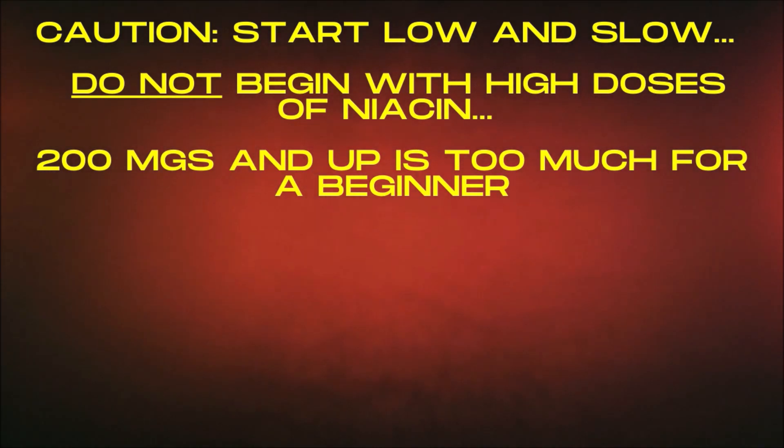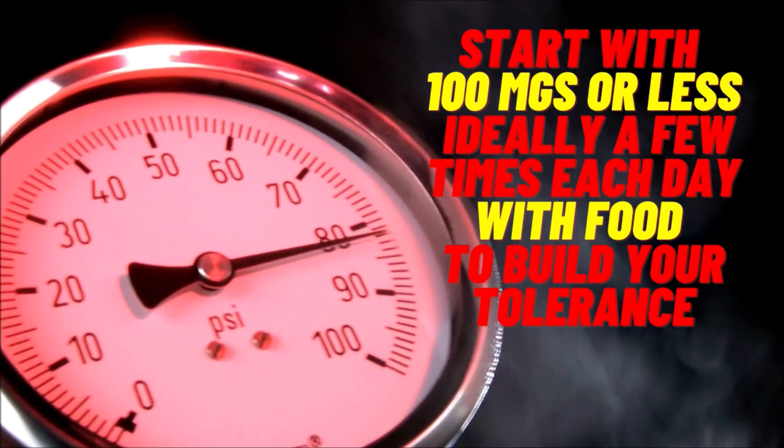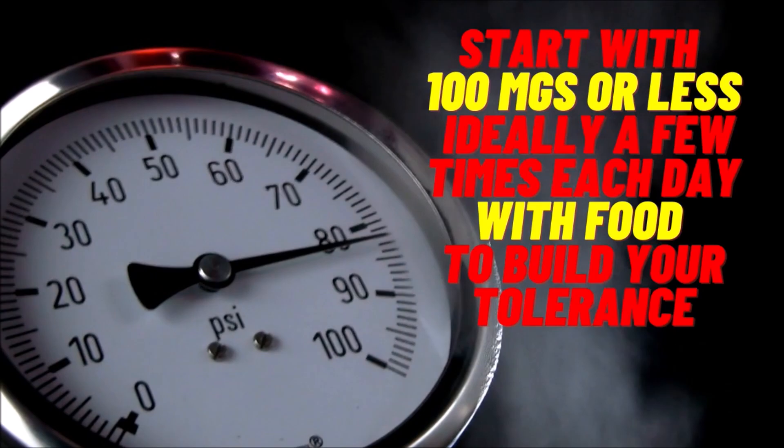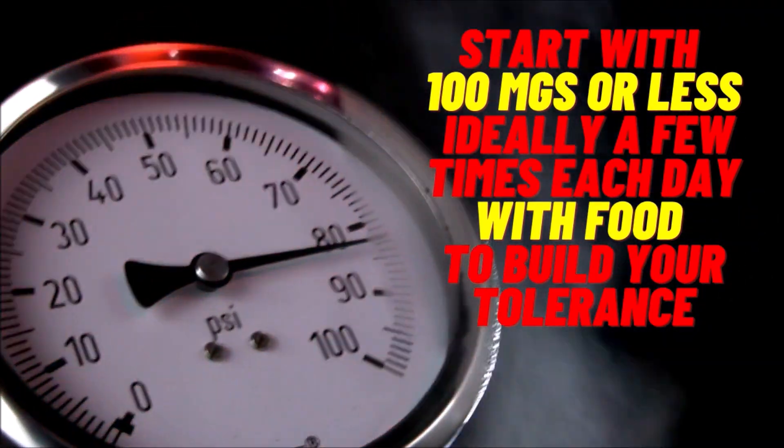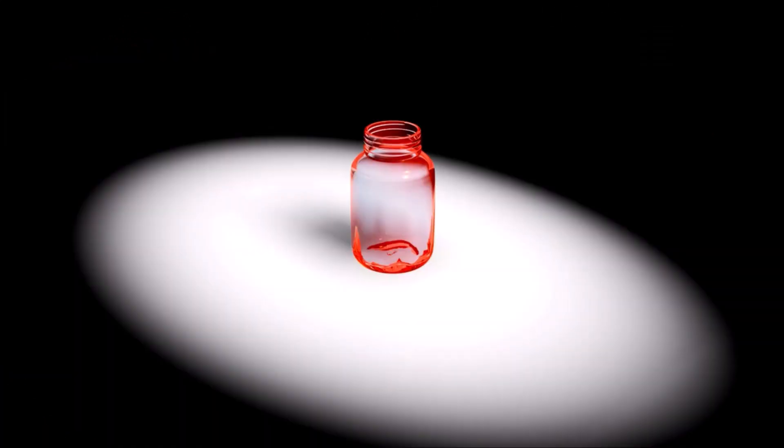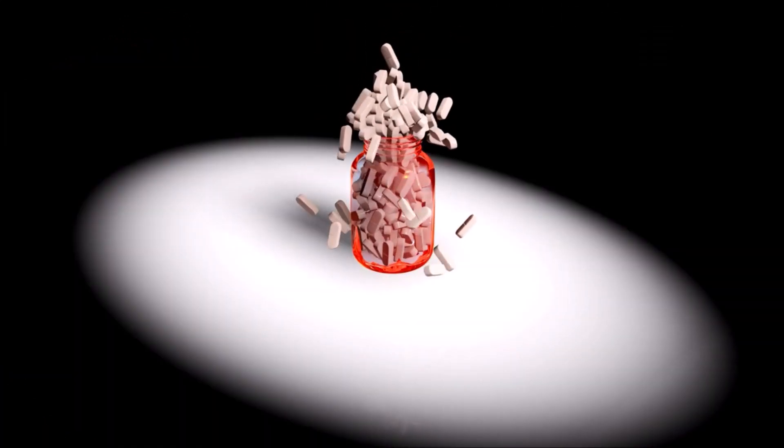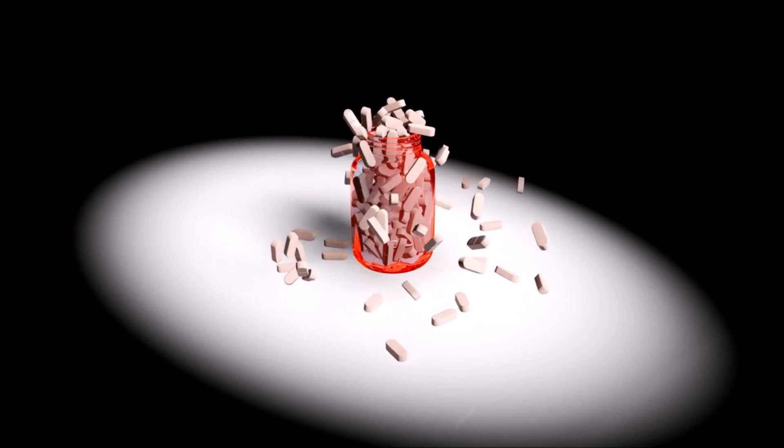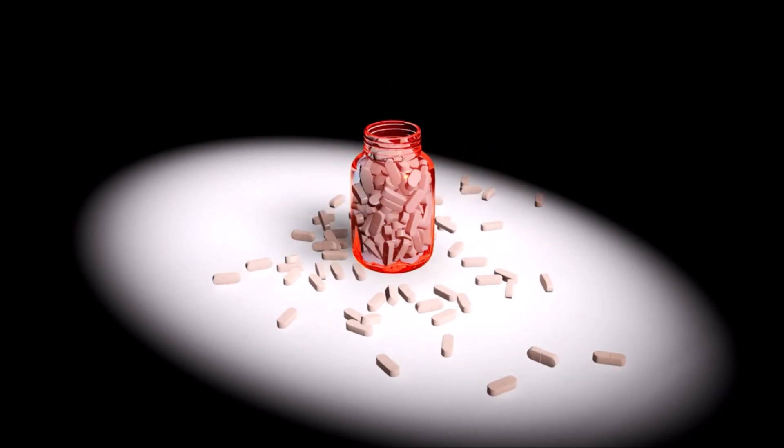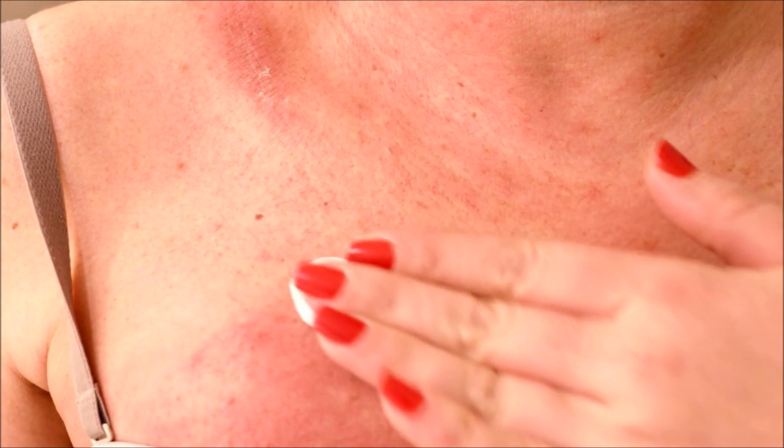So it's best to begin your niacin journey low and slow. Try starting with 100 mg or less if you're sensitive, and gradually increase that dose to build up a natural tolerance. When your body is accustomed to whatever niacin dose you're taking, you will no longer flush at that dose. This is when you can increase your dose, but again, do it slowly and gradually, ideally a few times each day.